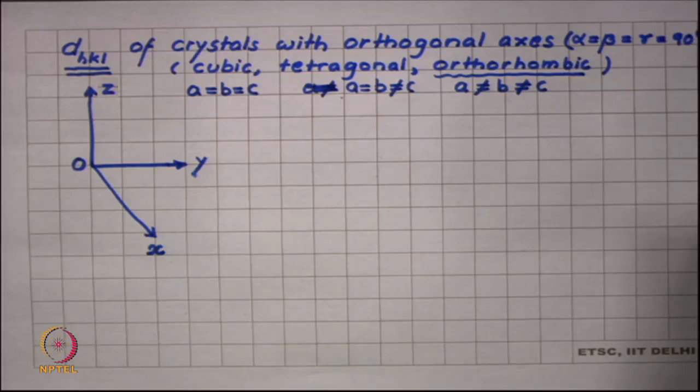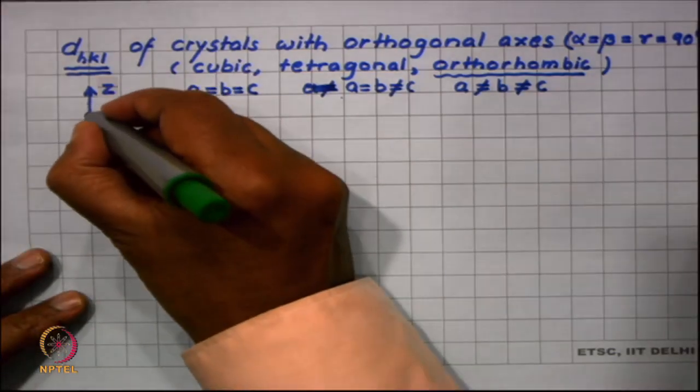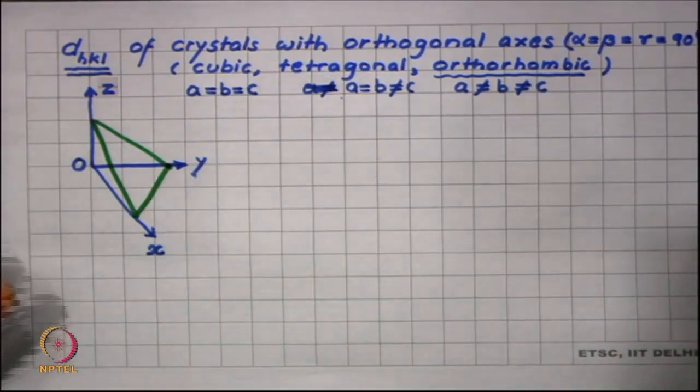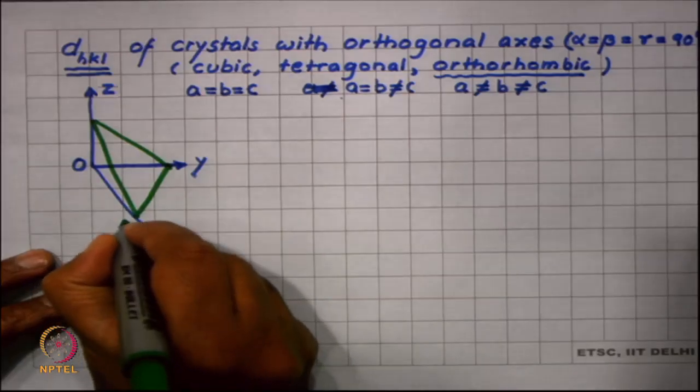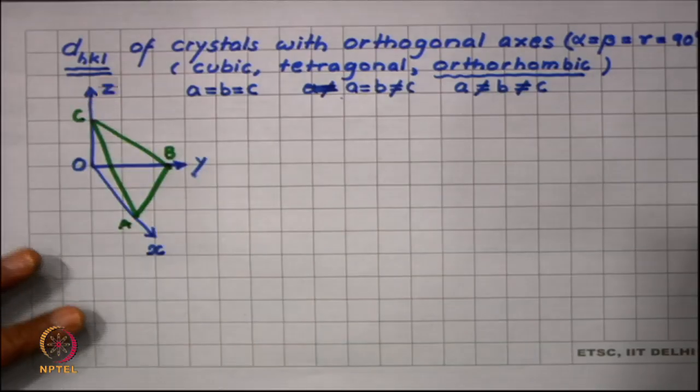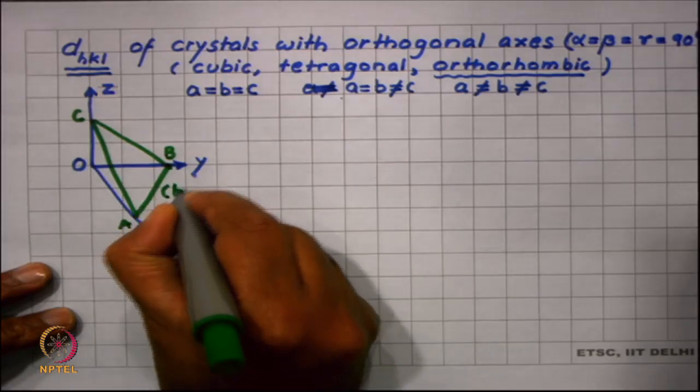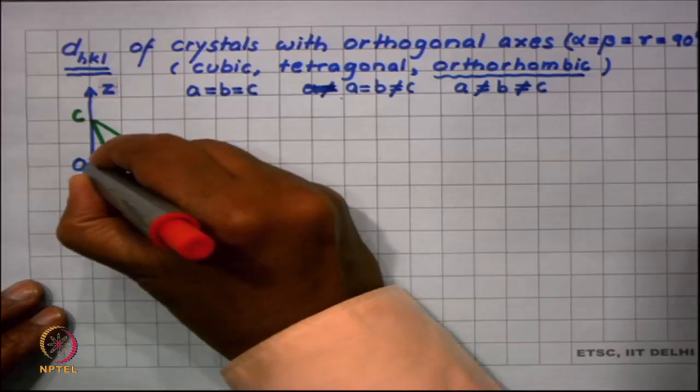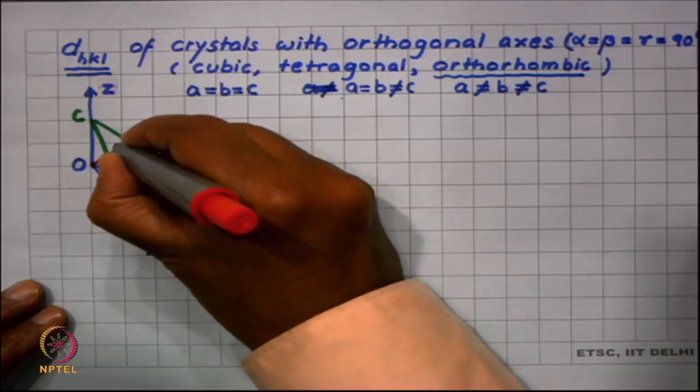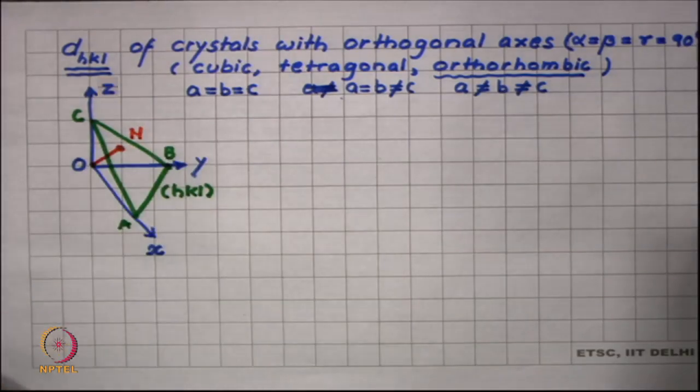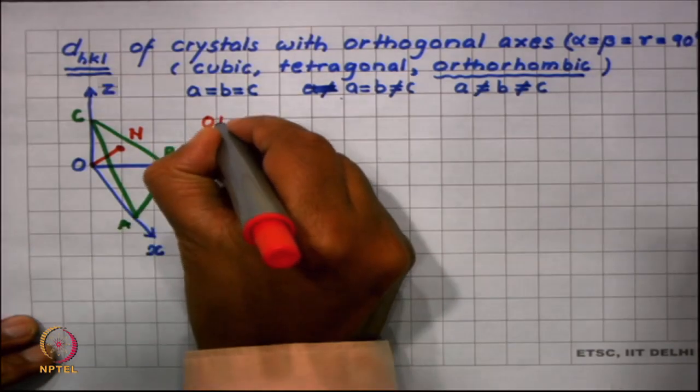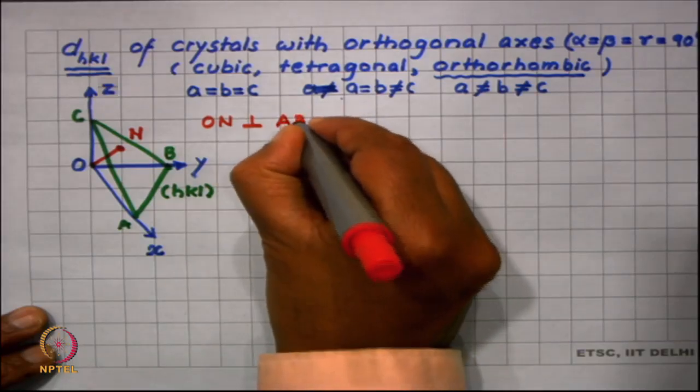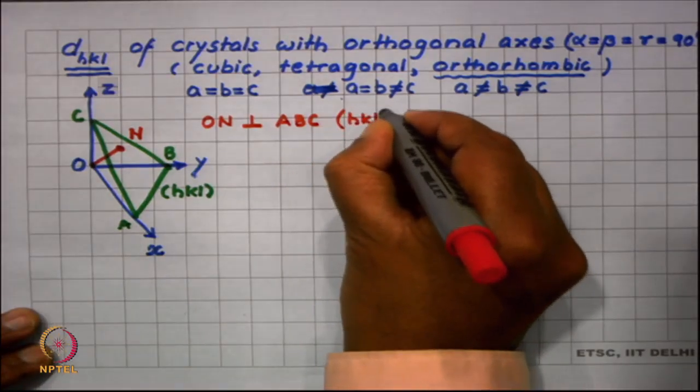We have three orthogonal axes and let us say that the first HKL plane away from the origin intersects the x axis at a, y axis at b, and the z axis at c. So abc is my HKL plane. Again, like in the last exercise for finding the plane normal, we drop a perpendicular ON onto the plane. So ON is perpendicular to abc which has miller indices hkl.